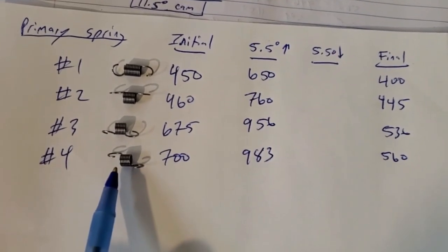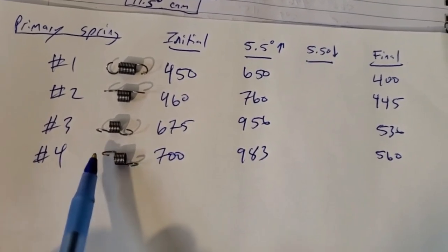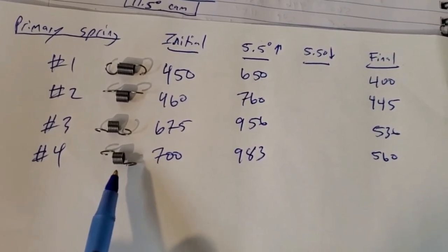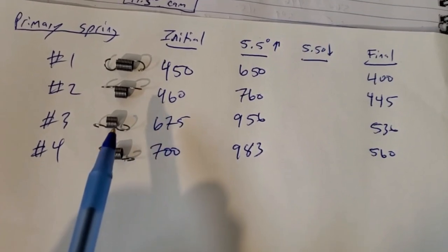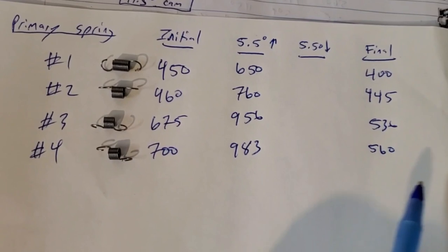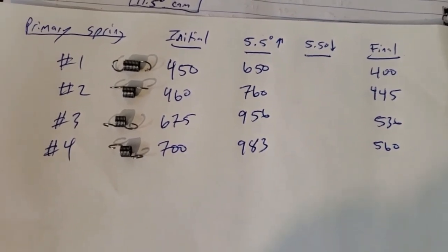You'll notice it has a slightly different configuration on its loops, and that's because this one actually has an extra half loop removed to make it stiffer than the one above it. Even though they all look the same, they give slightly different results, which is why you need to check them all.